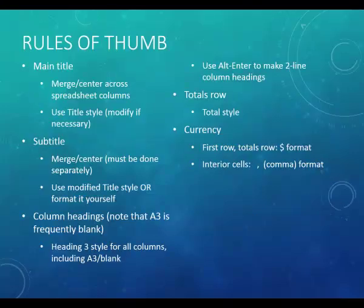Just as a summary — you could always rewind the video to come back and look here again — you would format the main title with Merge and Center and Title Style. Format the subtitle with Merge and Center and then either Modified Title Style or format it yourself. Format the column headings in Heading 3 style, maybe. I'll show you how to make a two-line column heading. The Totals row uses Total Style. And for currency, you do the first row and the last row with a currency or dollar sign format, and the interior cells with a comma style format. Let me show you how to do all of those things now.